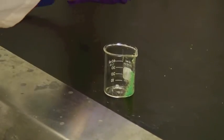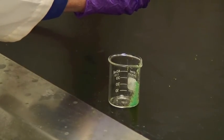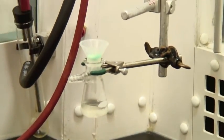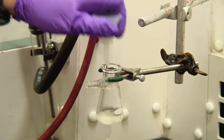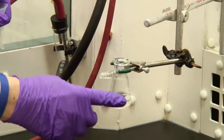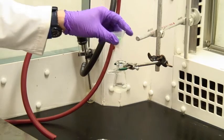If all you're interested in is the liquid, then just disconnect the vacuum, turn it off, remove this and you're done by pouring this liquid into another vessel.